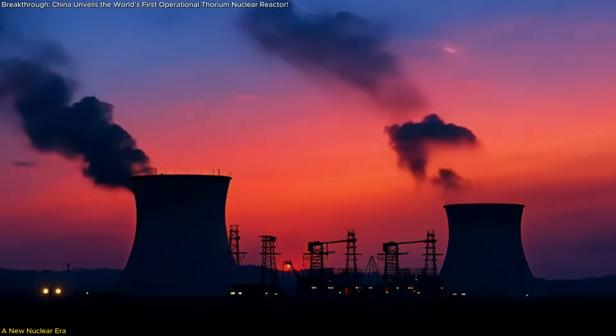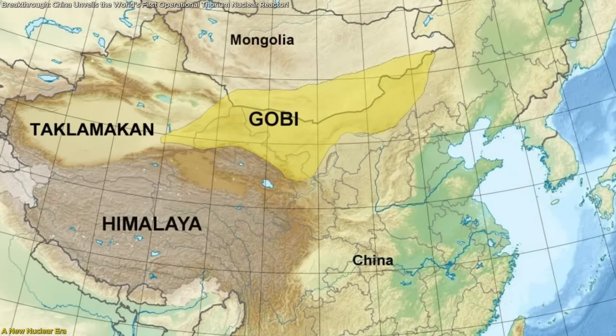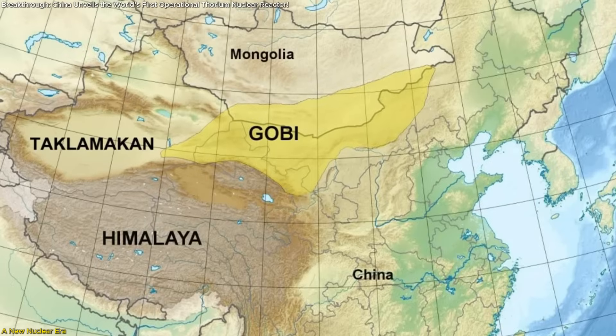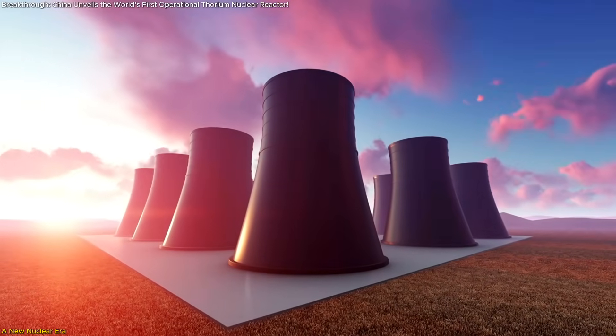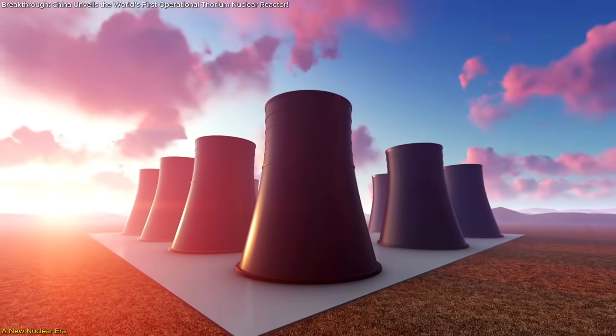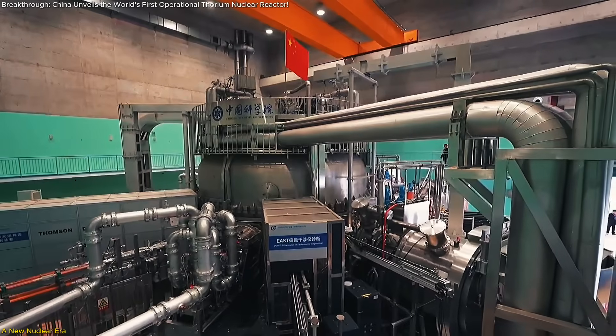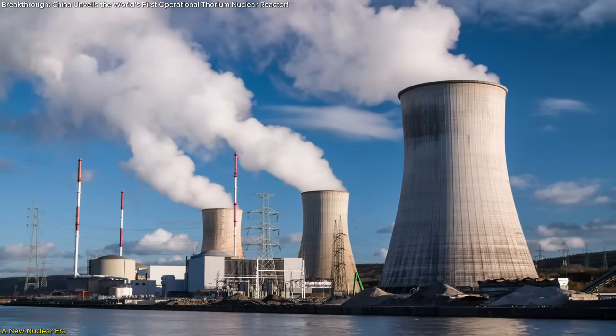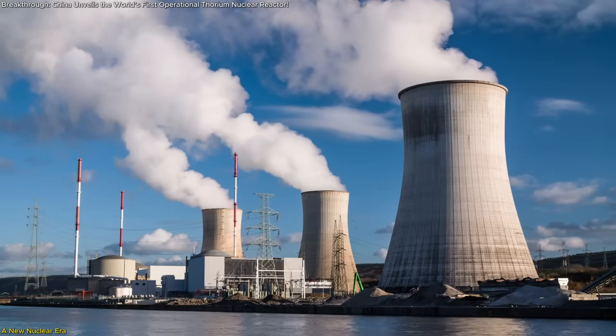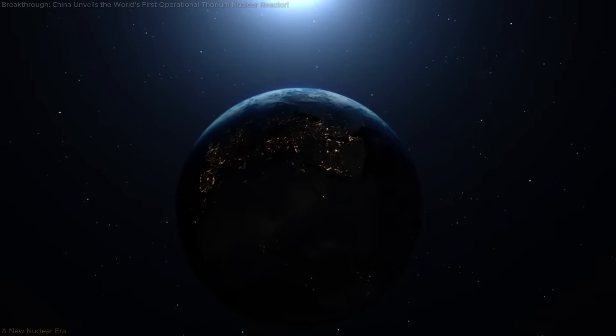That future is no longer theoretical. In the heart of China's Gobi Desert, scientists have just fired up the world's first fully operational thorium molten salt reactor and refueled it while it was still running. This video unpacks how they pulled it off, why it changes everything we know about nuclear power, and what it means for the global energy race.